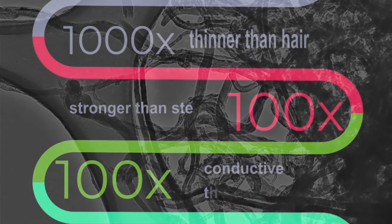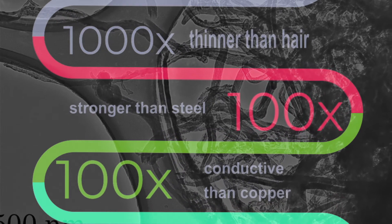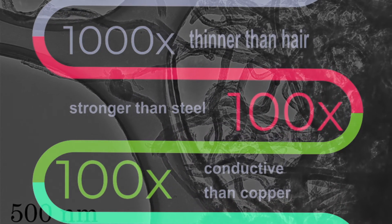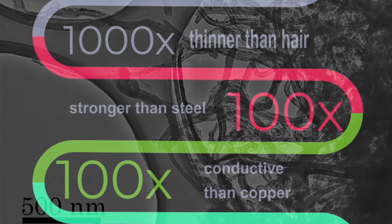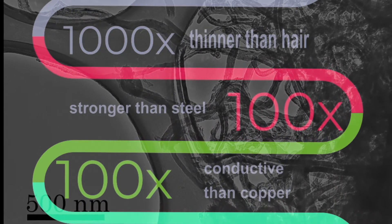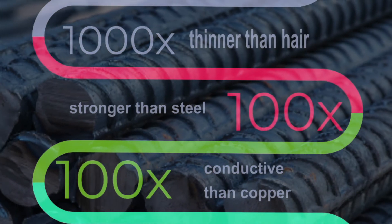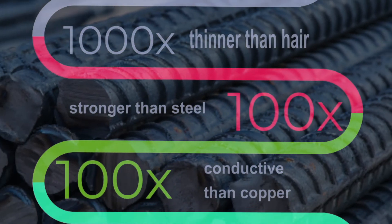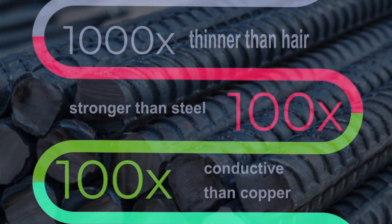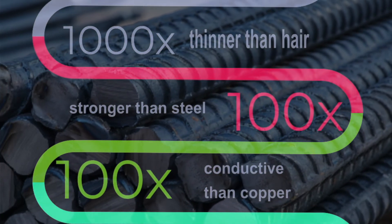Carbon nanotubes is 100 times stronger than steel and up to 100 times more conductive than copper, so it is used as an additive to base materials to improve end product performance.